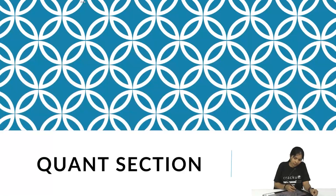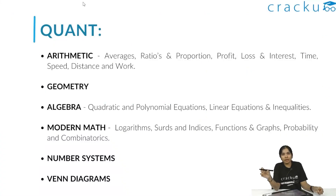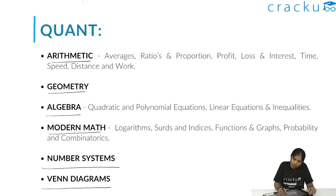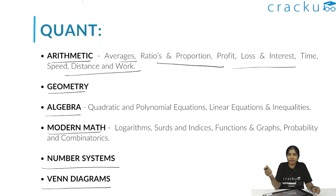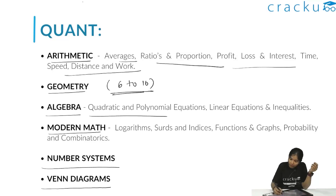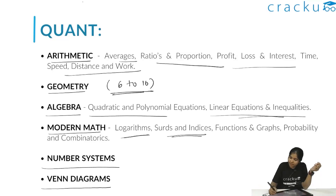Next, coming to the Quant section. Quant basically evaluates your mathematical and problem-solving skills. It covers topics like arithmetic, geometry, algebra, modern math, number system, and Venn diagrams. Arithmetic includes averages, ratios and proportions, profit and loss, interest, time-speed-distance, and work. Geometry covers basic concepts from 6th to 10th standard. Algebra includes quadratic and polynomial equations, linear equations, and inequalities. Modern math covers logarithms, surds and indices, functions and graphs, probability, and permutations and combinations.